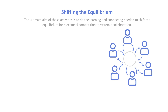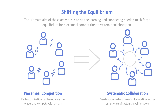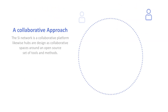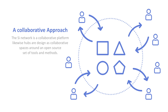Ultimately we're doing all of this as a way to enable systems innovation — actually doing this in practice. The hub is a platform for trying to do systems innovation. What we're really doing is trying to shift the equilibrium within a specific geography or domain, from something we'd recognize today — piecemeal competition where each organization recreates the wheel — to something more collaborative. It's systemic collaboration, creating an infrastructure of collaboration for the emergence of systems-level functions. It's a collaborative platform, really. Hubs are likewise — designed as collaborative spaces around an open-source set of tools and methods.